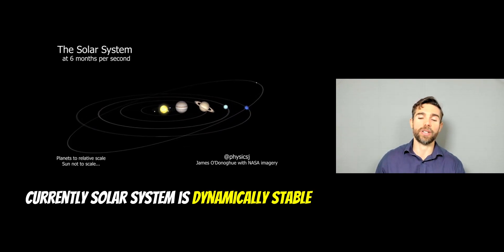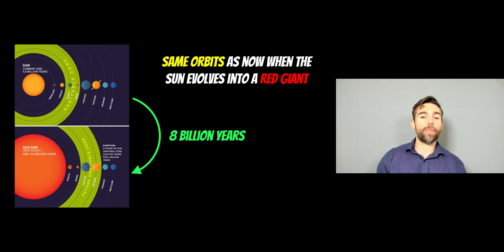That's kind of what we think. So these orbits are likely going to stay as they are in the grand scheme of things. What do we mean by dynamically stable currently going forward? Well, it means that the planets are likely going to be on the same orbits they are now when the sun evolves into a red giant.